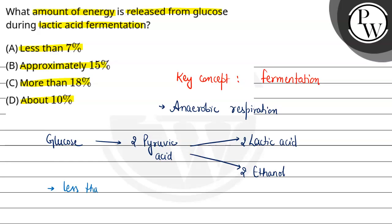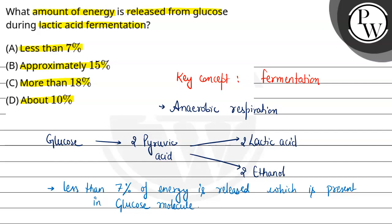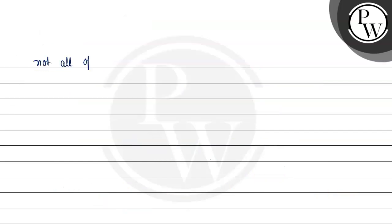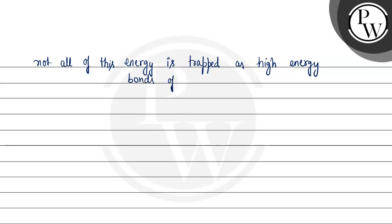In dono fermentation ki processes mein zyada energy release nahi hoti hai — less than 7% of energy is released which is present in the glucose molecule. Aur ye saari energy utilize nahi hoti hai for the synthesis of ATP — not all of this energy is trapped as high energy bonds of ATP.